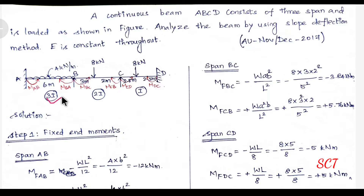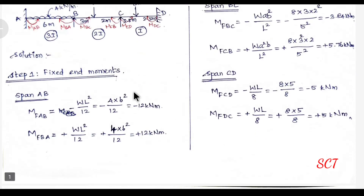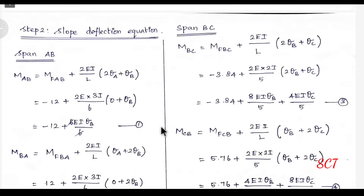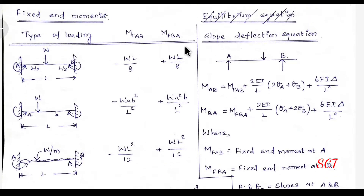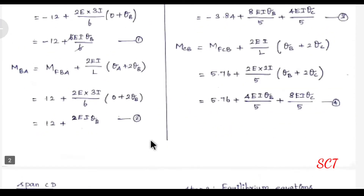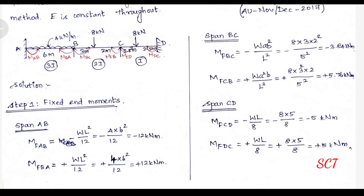Span AB has I value of 3i, span BC has I value i. Step 1: Fixed end moments. For UDL load, we already have the formula: MF_AB = minus WL² divided by 12, and MF_BA = plus WL² divided by 12. Substituting: W value is 4 kN/m, L value is 6m. Solving gives minus and plus 12 kNm².